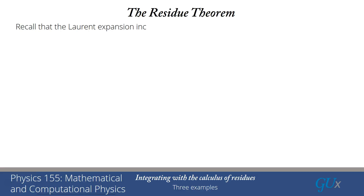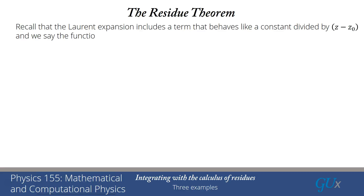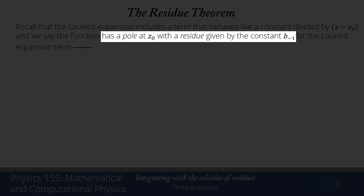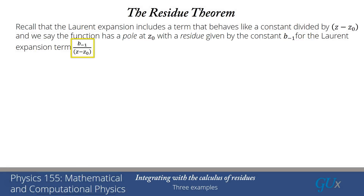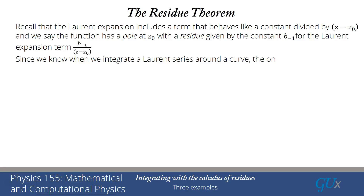We've kind of mentioned this and you've sort of been using it, but let's really determine precisely what the residue theorem is. Recall that the Laurent expansion includes a term that behaves like a constant divided by z minus z₀. When you have such a term, we say that the function has a pole at z₀ with a residue given by the coefficient b₋₁ for that Laurent expansion term, which goes like b divided by z minus z₀. Clearly, that's a function that has a singularity — the function becomes infinite when z approaches z₀, and the strength of the infinity is given by b₋₁. We also know that when we integrate around a closed path, it's only that term that contributes to the integral, because the integral of every other power is equal to zero.